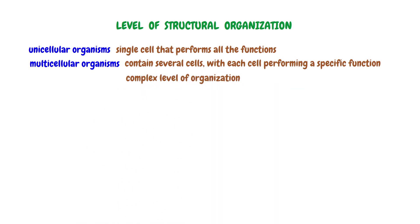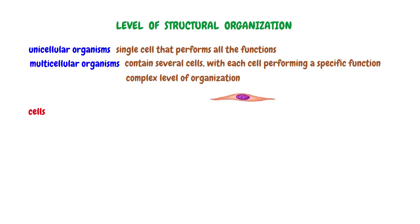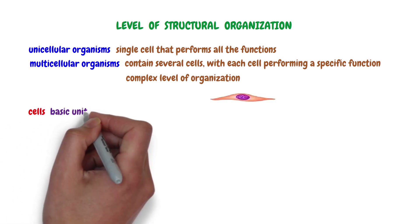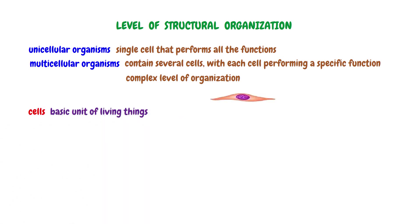The first level of complexity is cells. A cell is the basic unit of living things. At this level, the characteristics of living things are observed, such as the intake of nutrients, production of energy, removal of waste material, growth, and reproduction.